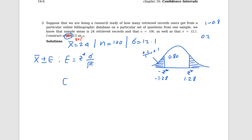Let me find E, the maximum error or margin of error. z-star equals 1.28, sigma equals 12.1, and n equals 100. So E equals 1.28 times 12.1 divided by the square root of 100, which gives 1.5488. That is the margin of error.